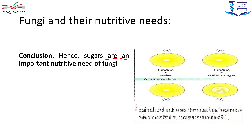Conclusion: sugars are an important nutrient for fungi. Similarly, from another experiment with one petri dish containing water and another without water, there is growth with water and no growth without water. So water is also a nutritive need for fungi.